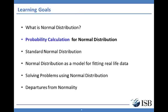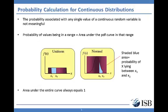We move on to our next learning goal: how to compute probabilities for a normal distribution. The key question is how do you compute probabilities given its probability density curve? The fundamental difference between probability computation for discrete and continuous distributions is that the probability of obtaining a certain specific value is not meaningful for the latter.